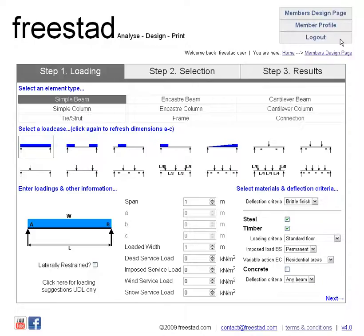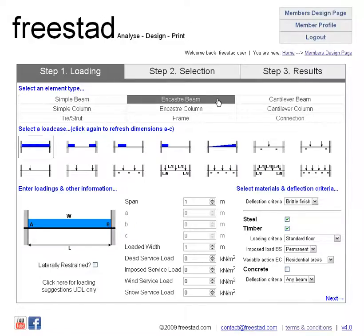Depending on when you're watching this, other beams, elements, and materials may be available. So let's have a look at the Members Design page. First of all you simply select an element type — let's say for example we want to design an encastre or fixed end beam.